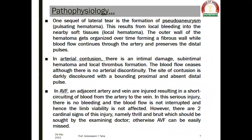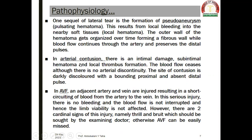One sequela of a lateral tear is the formation of a pseudoaneurysm, or pulsating hematoma. This results from local bleeding into nearby soft tissues forming a local hematoma. The outer wall of the hematoma gets organized over time, forming a fibrous wall, while blood flow continues through the artery and preserves the distal pulses. In arterial contusion, there is intimal damage, sub-intimal hematoma, and local thrombus formation. The blood flow ceases although there is no arterial discontinuity. The site of contusion is directly discolored with a bounding proximal and absent distal pulse.